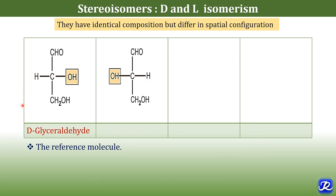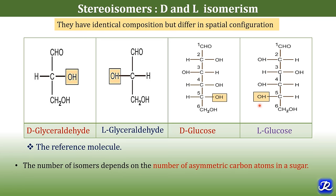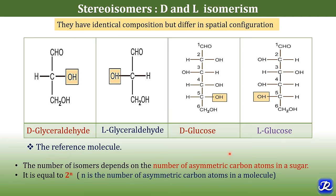In this case, the OH group is present on the right side, and that is why it is called D-glyceraldehyde. Here the OH group is present on the left side, and that is why it is L-glyceraldehyde. This is a structure of glucose where the reference carbon atom is carbon number 5. Here the hydroxyl group is present on the right side, so it is D-glucose; here it is on the left side, so it is L-glucose. The D and L isomers are mirror images of each other and are also called enantiomers.